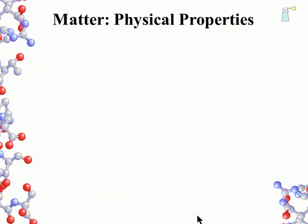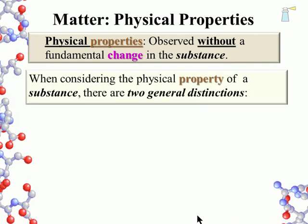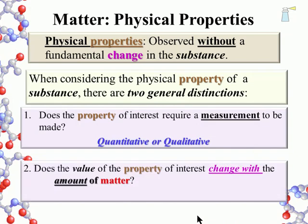Returning to the other major type of properties of matter: physical properties — observed without a fundamental change in the substance. When considering physical properties, there are two general distinctions. The first: does the property of interest require a measurement to be made? This determines whether the property is quantitative or qualitative. The second: does the value of the property change with the amount of matter? This distinction decides whether the property is extensive or intensive.